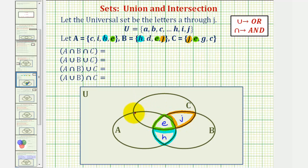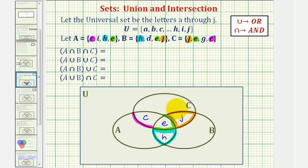Now let's look at this region, which contains the elements that are only in A and C. Looking at A and C, notice the element lowercase c is the only element in A and C. Now we can determine the elements that are only in A, only in B, and only in C. Looking at set A, I is the only element only in A. Looking at B, D is the only element only in B. And looking at C, G is the only element only in C.